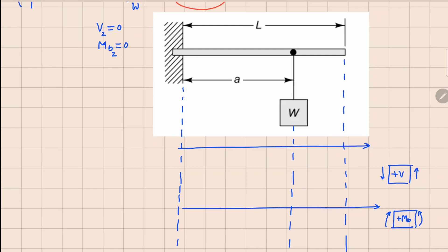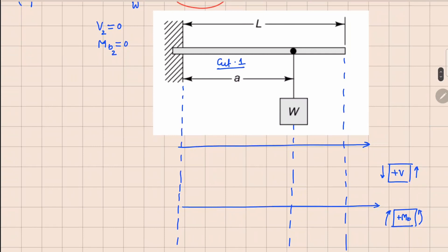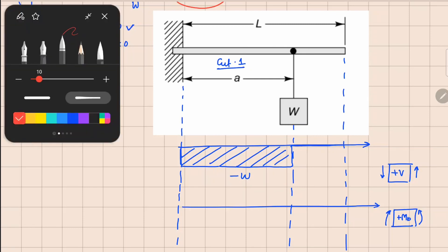Now in the first cut, this is your cut one, the value of V1 we have got is minus W, so we are going to plot minus W from here to here. And V2 value is zero, so we are going to maintain it in this manner. So if I highlight the boundaries of this, this is how your shear force diagram looks.